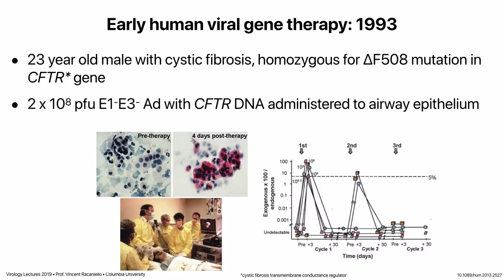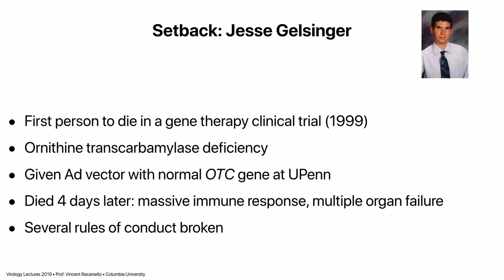In 1999 came the first major setback: the first person to die in a gene therapy clinical trial. Jesse Gelsinger was 18 years old with ornithine transcarbamylase deficiency — a heterozygote with a mild form of the disease, who enrolled voluntarily at UPenn. He was given an adenovirus vector with the wild-type gene and died four days after receiving the injection from a massive immune response against the virus and multiple organ failure. An investigation revealed Penn had violated various rules and had probably given him too much virus. The program was stopped for a time.